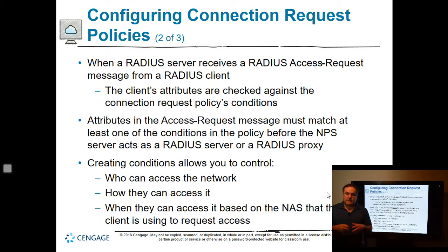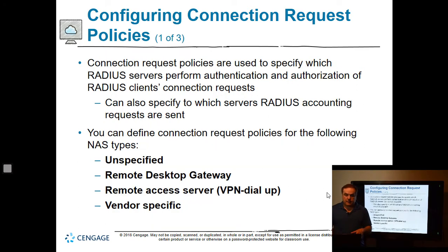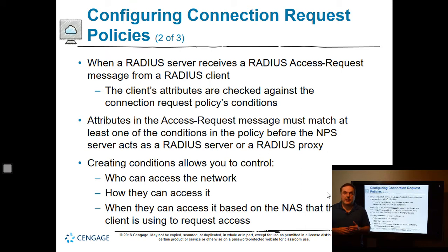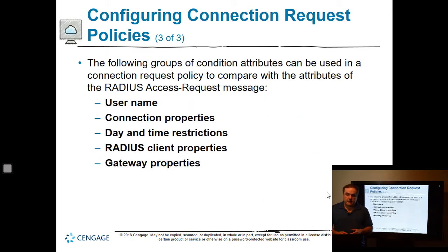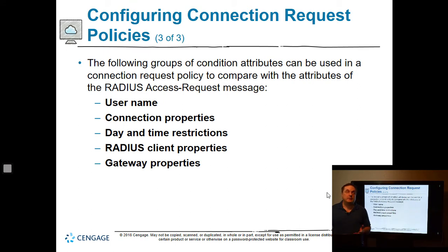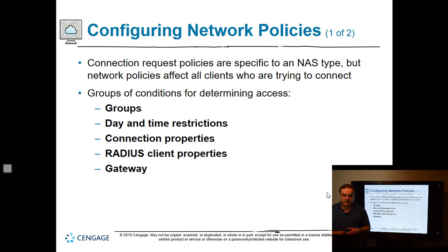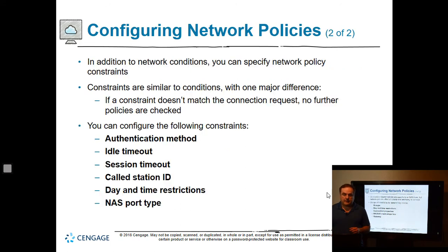When a RADIUS server receives a RADIUS access request message from a client, the client's attributes are checked against the policy — it has to match in order to move forward. Creating conditions allows you to control who can access, how they access, and when they access. The following groups of condition attributes can be used in a connection request: name, connection properties, day and time, client properties, and gateway properties. There are also groups, day and time restrictions, connection properties, clients, and gateway information.